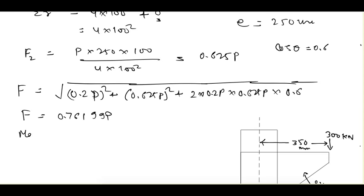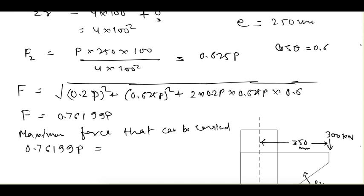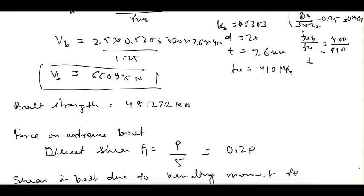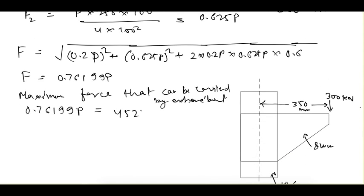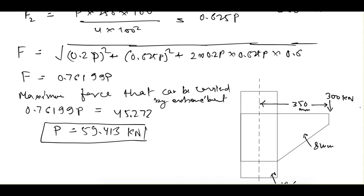For the maximum force that can be carried, we equate F to the bolt strength: 0.76199P = 45.272 kN (bolt strength). Solving, P = 59.413 kN. This is the maximum factored load P the connection can carry.